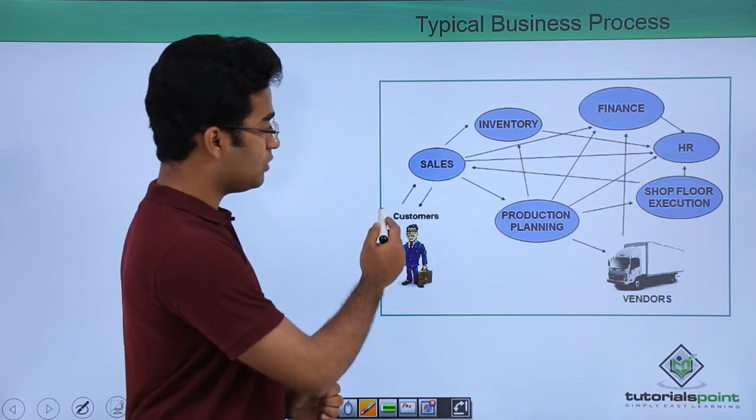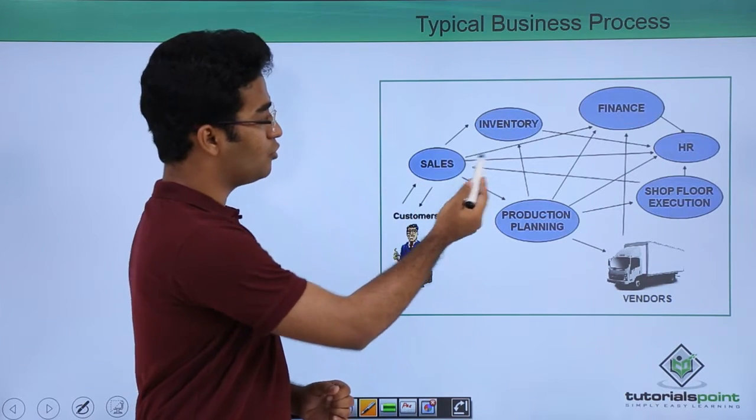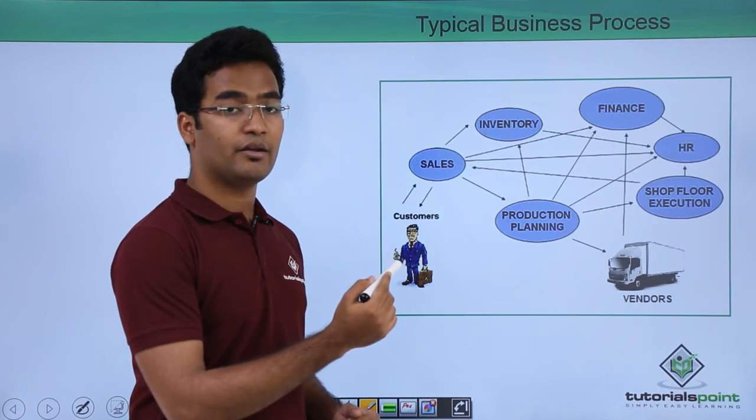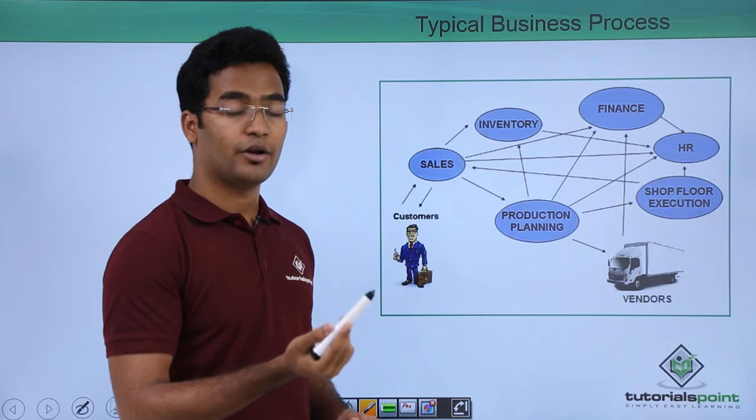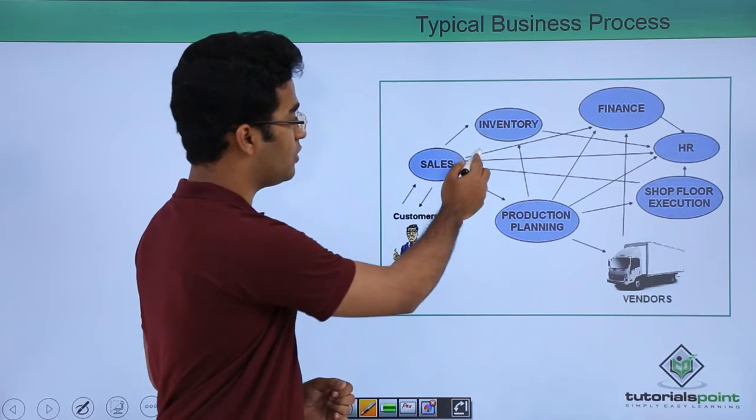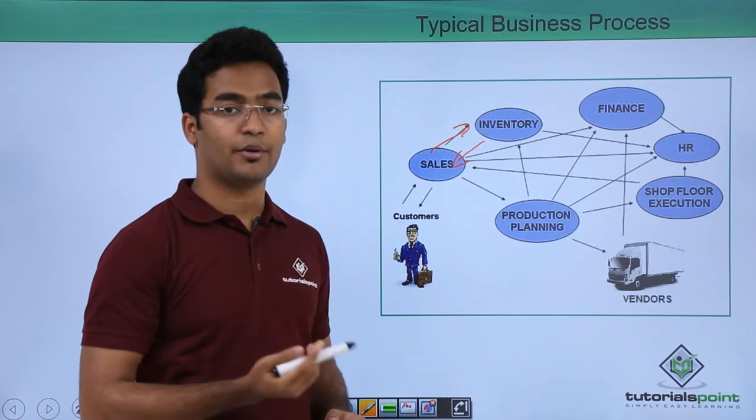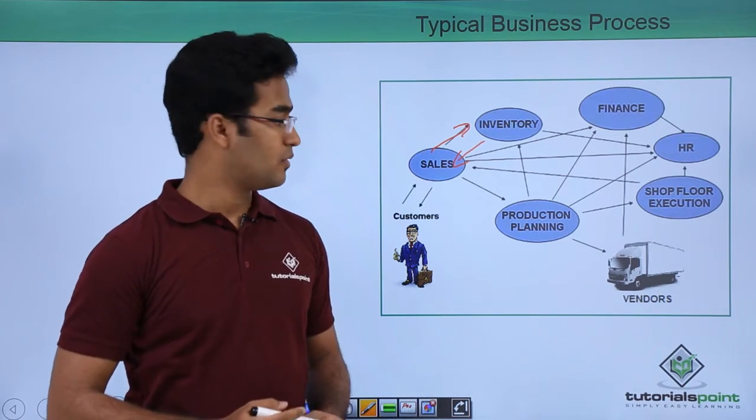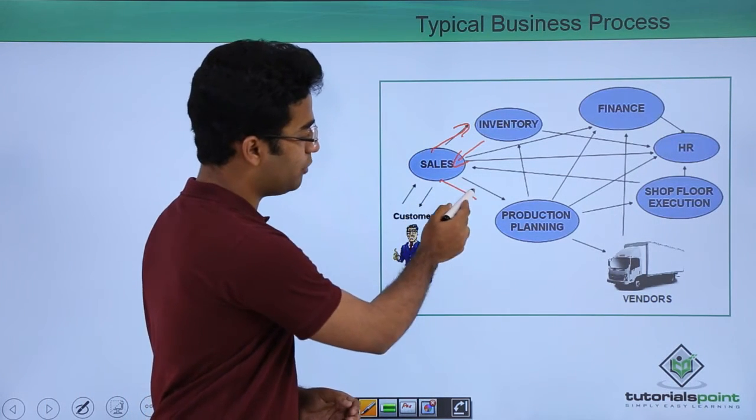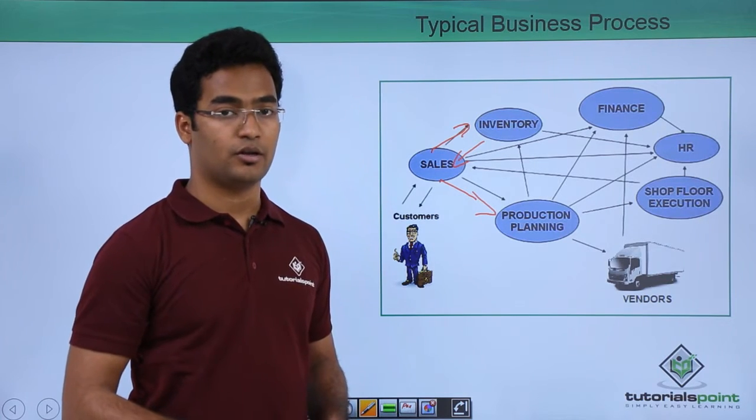Suppose the sales department goes to the inventory and the inventory department says that particular product is out of stock. The inventory reverts back to the sales department that the particular product is out of stock. Then the sales department goes to the production planning to produce that particular product.